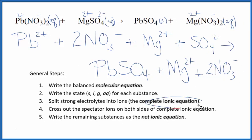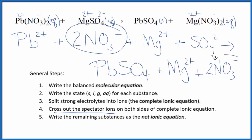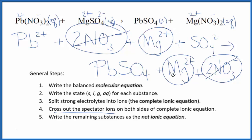This is the complete ionic equation. Now we can cross out spectator ions — they appear on both sides. I have two nitrate ions on the reactant side, the same as on the product side — cross those out. I have the magnesium ion in the reactants and in the products — cross that out too. What's left is the net ionic equation for Pb(NO3)2 plus MgSO4.